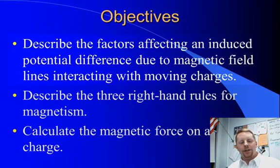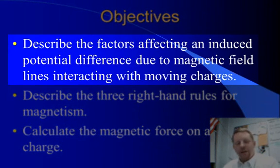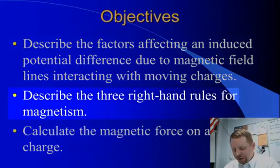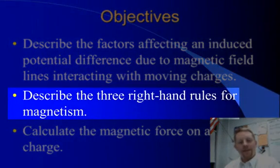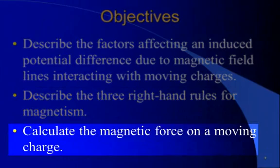Our objectives are going to be to describe the factors affecting an induced potential difference due to magnetic field lines interacting with moving charges, describe the three right-hand rules for magnetism, and finally we'll see if we can't calculate the magnetic force on a moving electrical charge.